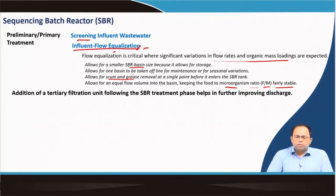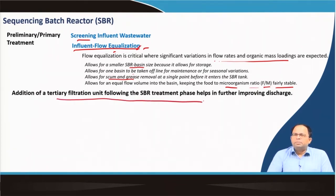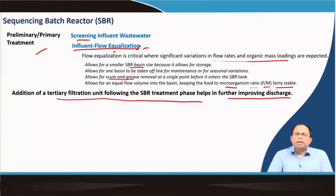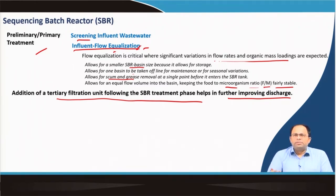Sometimes we also add a tertiary filtration unit following the SBR treatment. Similar to pre-treatment, we can have post-treatment where a tertiary filtration unit is added to the SBR treatment, which further improves the discharge quality. The decanted effluent or decanted volume can be further treated using this filtration unit.